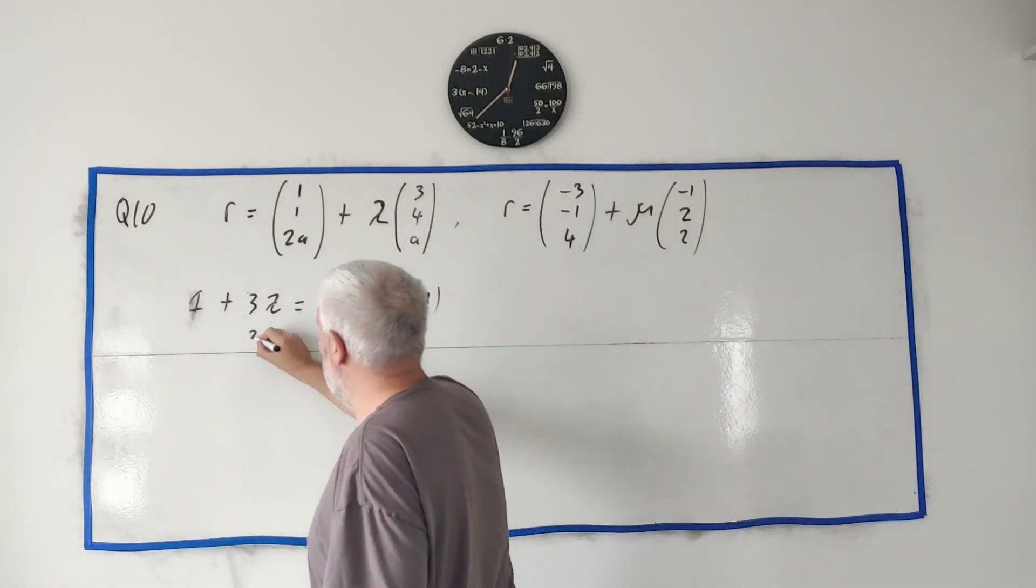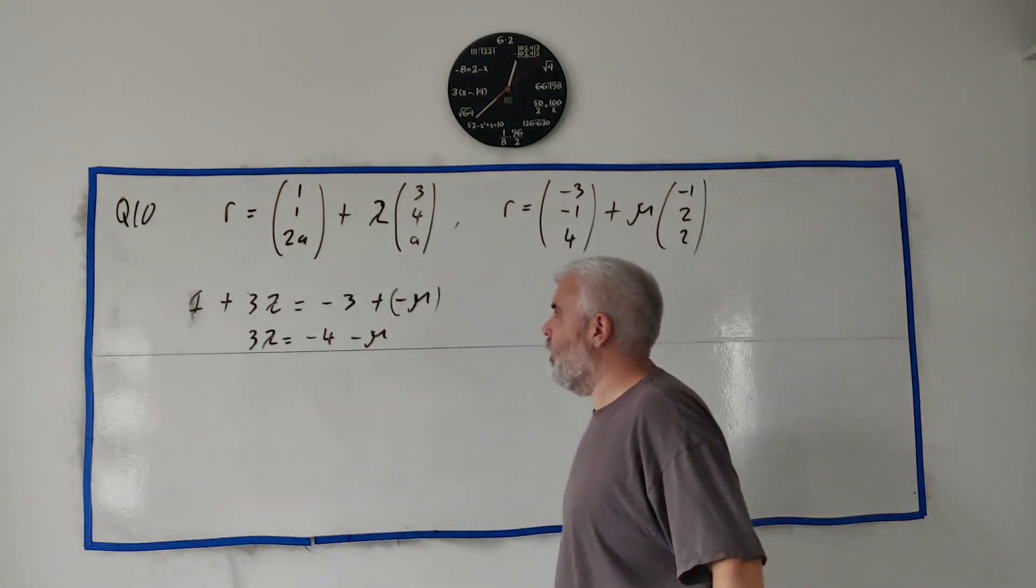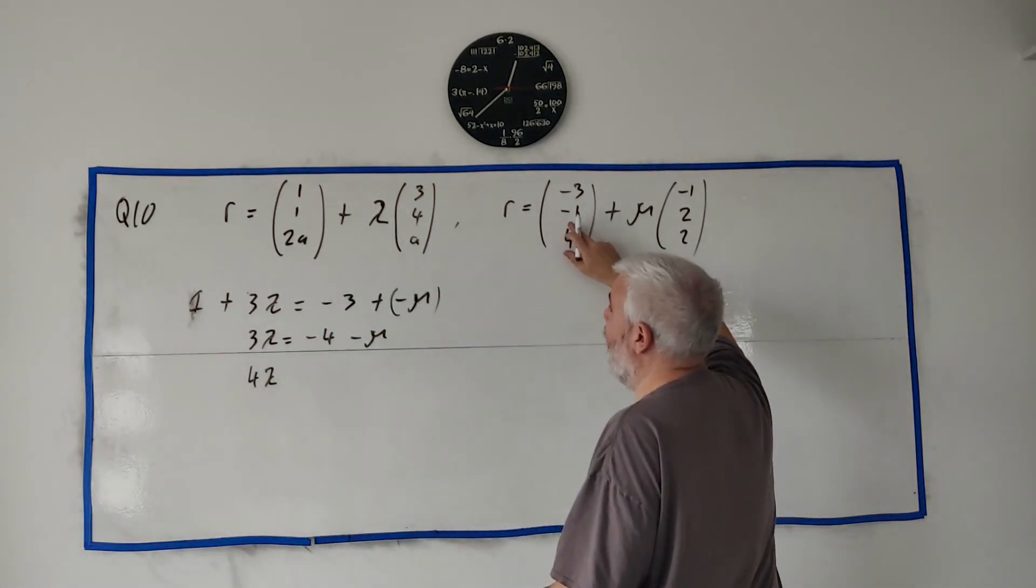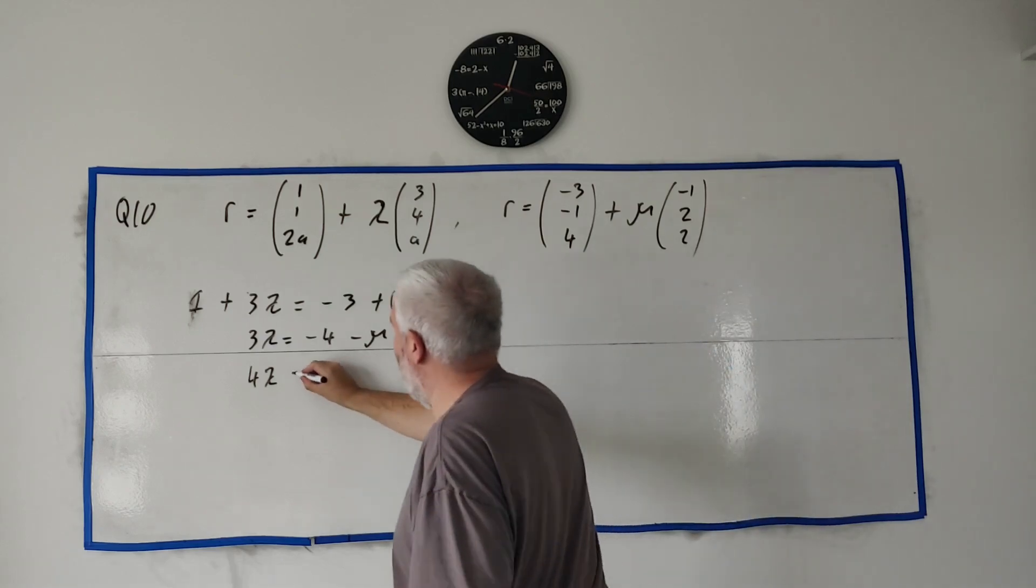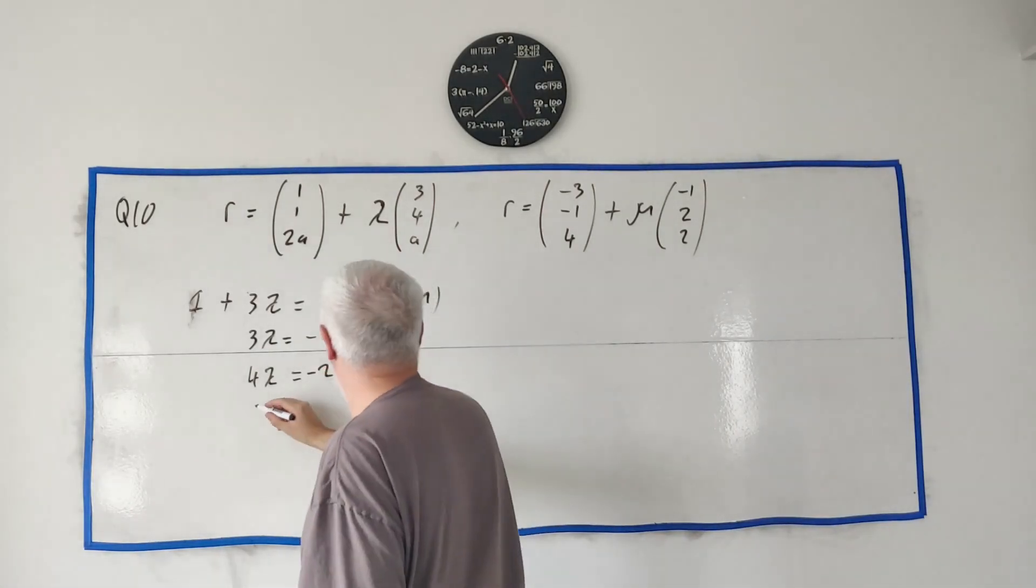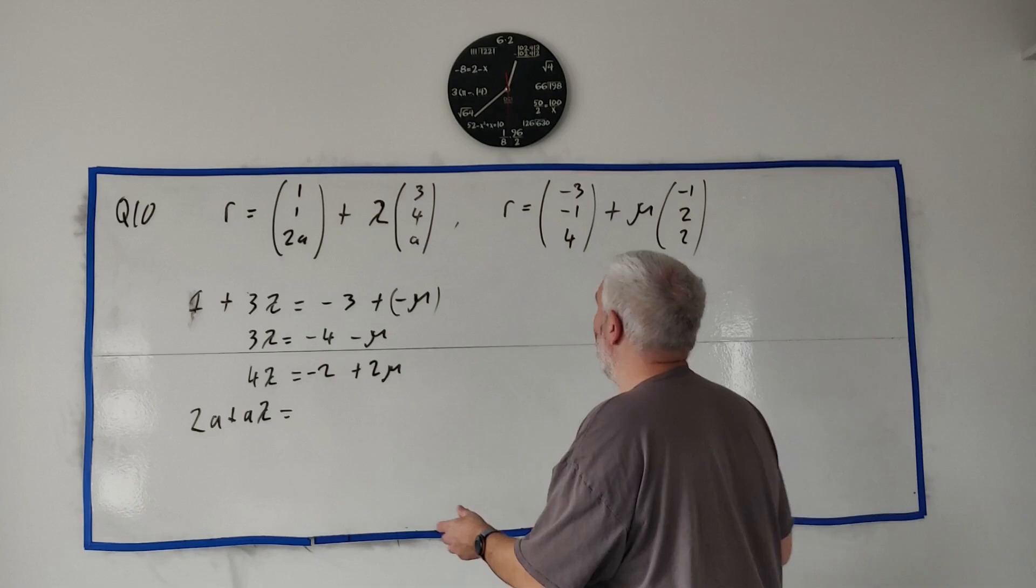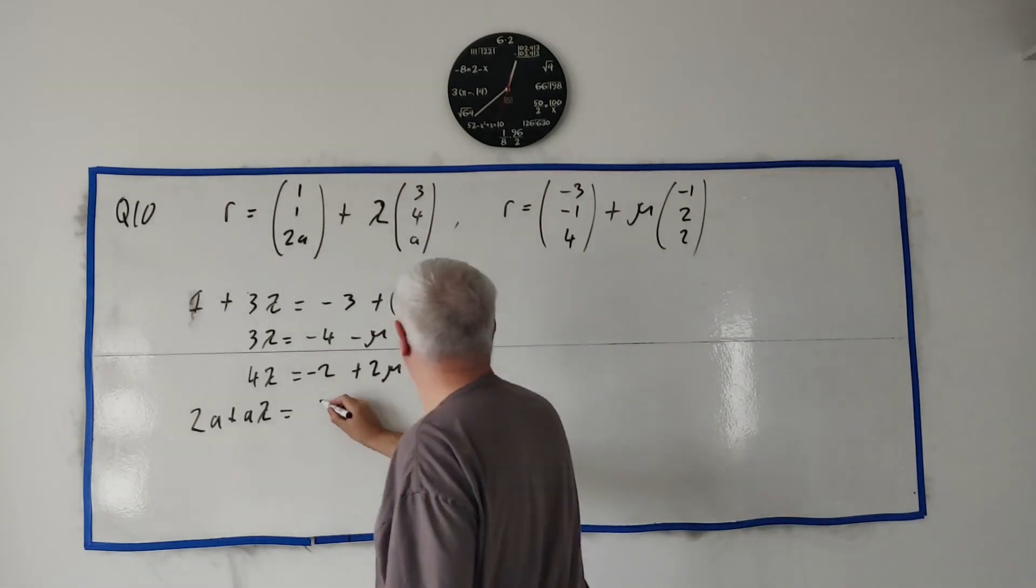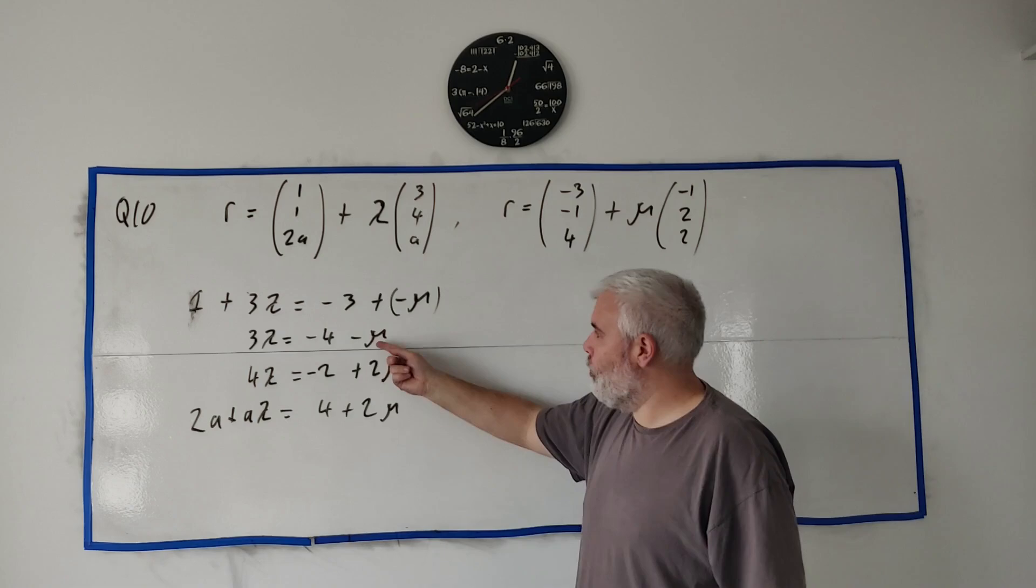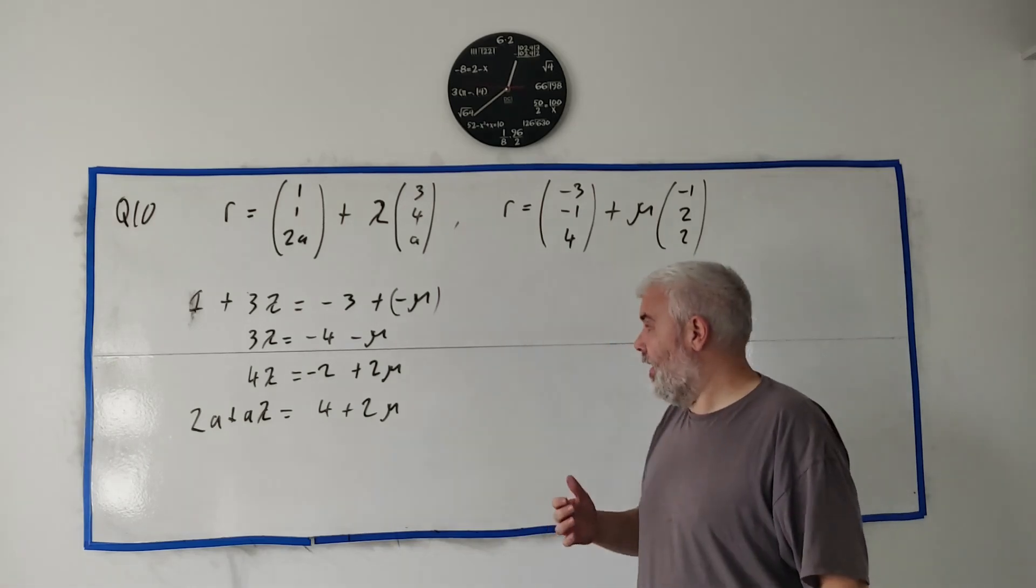If I clean this one up, I'd get 3λ = -4 - μ for the first row. Second row, I'd get 4λ = -2 + 2μ. And then finally I would get aλ—let's just write 2a here—equals 4 + 2μ. There are three equations with three unknowns—I don't know λ, I don't know μ, I don't know a—but I have three equations. We can solve this, it's a simultaneous equation with three variables.